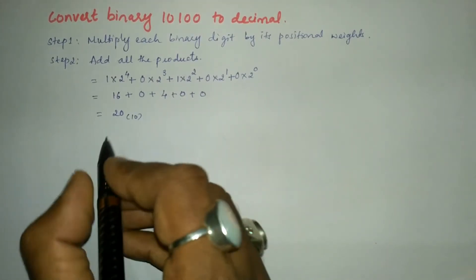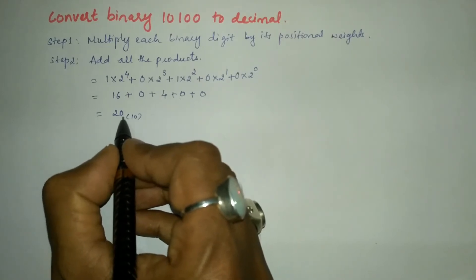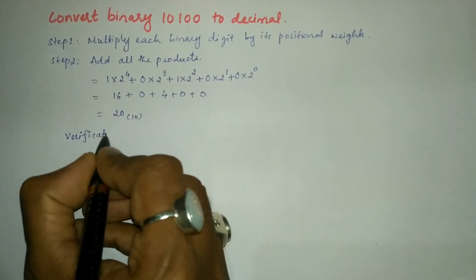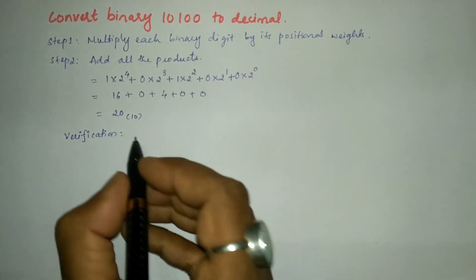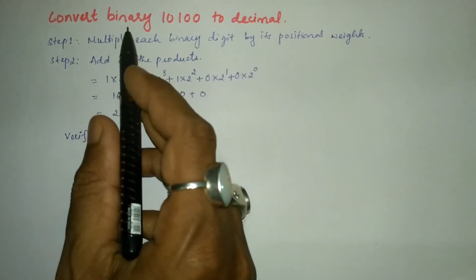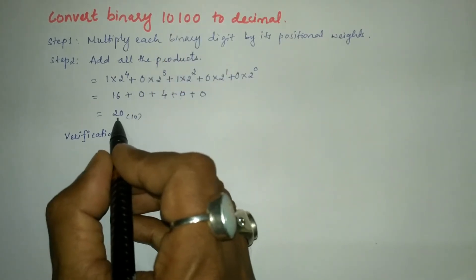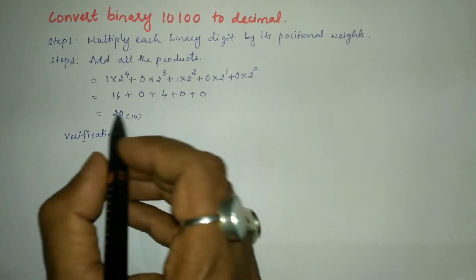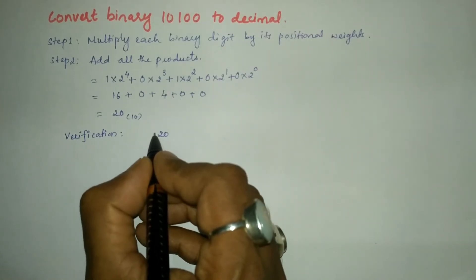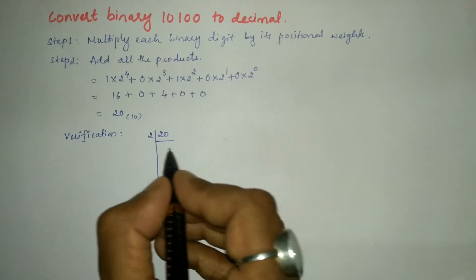Whether this particular answer is correct or not, I have to check it out. How do you check? We are going to verify. We need to convert this decimal number into binary number once again. If I get 10100, then the answer we got in decimal is absolutely correct. This is the decimal number, 20.